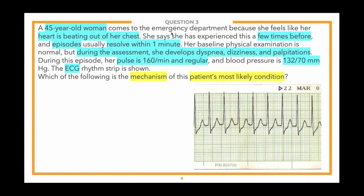When we hear something like this, we want to know more about it: how many times has it happened, does it come and go, how long does it last — and we're given some of that information in this vignette. Then the physical exam, vital signs, EKG, and physical exam findings are important too. Something irregular happens during her physical exam assessment. The question asks about the mechanism of the most likely condition, so we have to figure out: one, what is the most likely condition, and two, what is its mechanism — making this a two-step question.